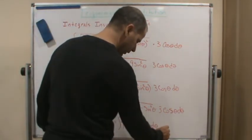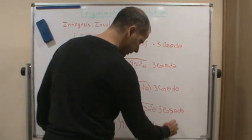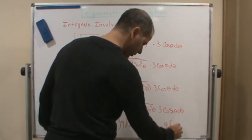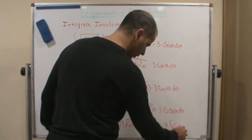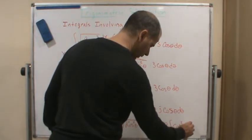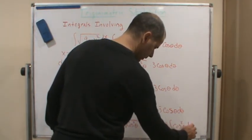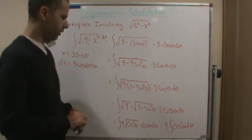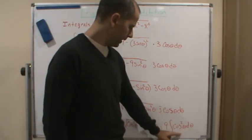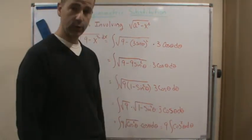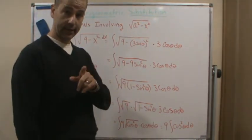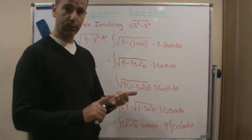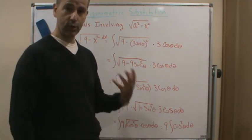So I'm going to end up with 9 times the integral of cosine squared theta d theta. And then, what happens? Look what I have now. Now, I can solve this by using what we learned, the techniques that we learned in using the product and powers of trig functions.